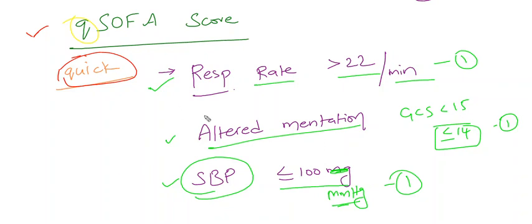Here, a positive QSOFA score is more than or equal to 2. If any 2 of these or all 3 are present, this suggests high risk of poor outcome in patients with suspected infection. These patients should be more thoroughly assessed for evidence of any organ dysfunction. A positive QSOFA score by itself should not trigger sepsis-directed interventions like initiation of broad-spectrum antibiotics.